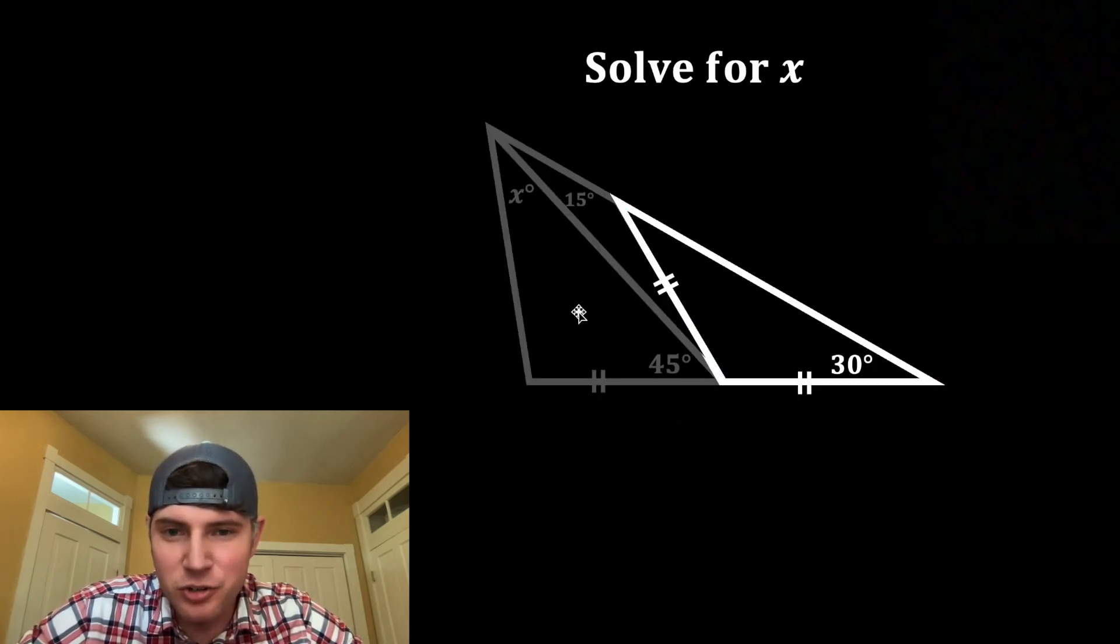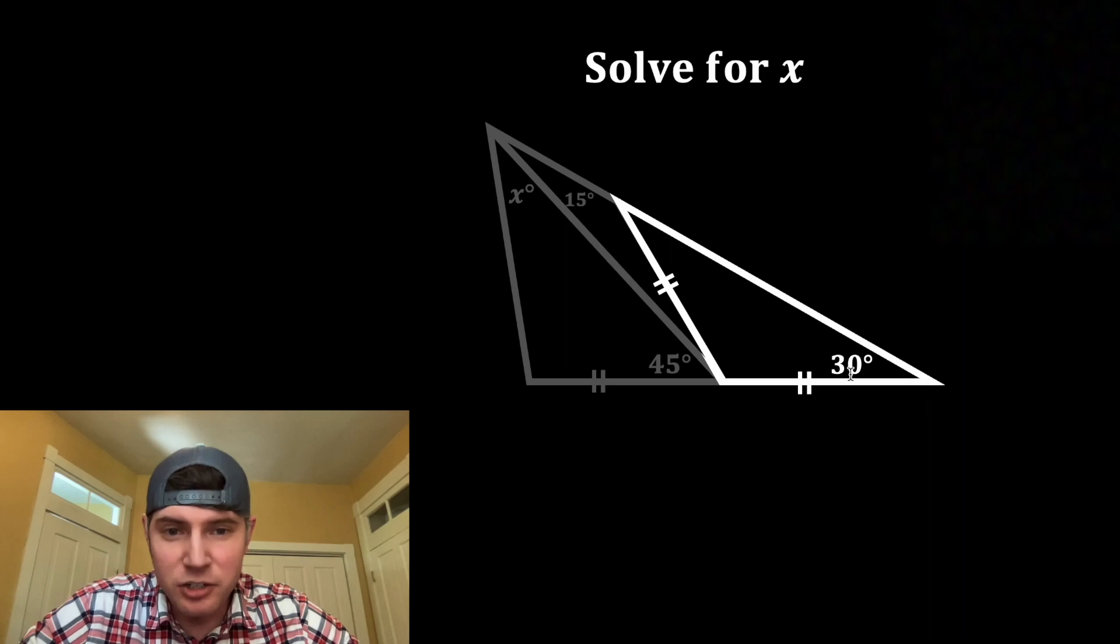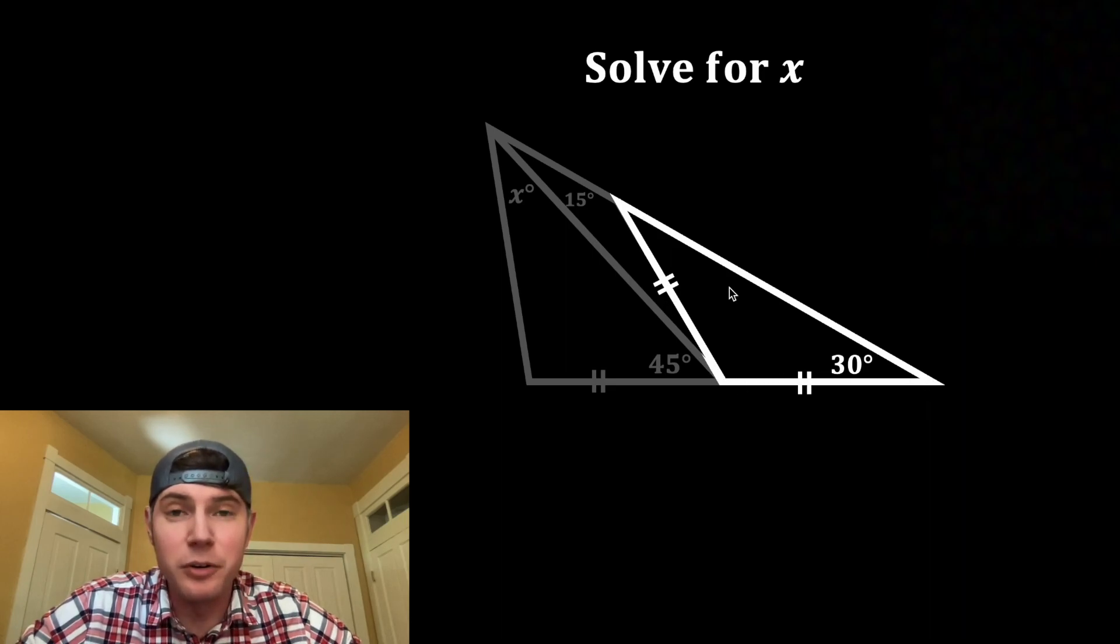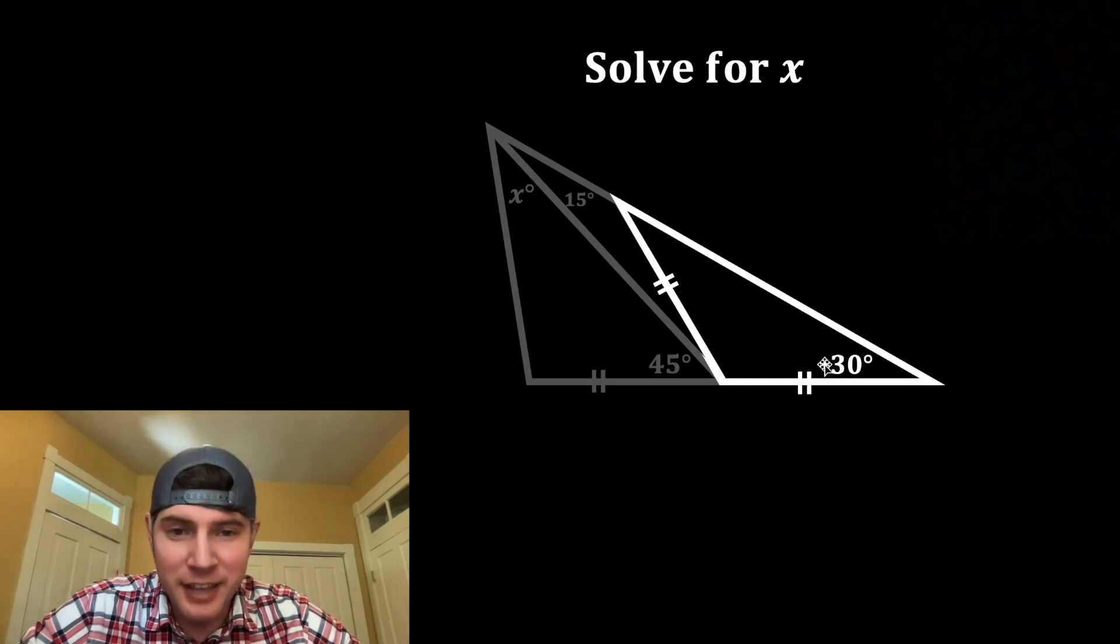Next, let's focus on this triangle right here. Since there are two sides congruent in this triangle, we know it's an isosceles triangle. And the angles opposite the congruent sides are also congruent, so we know that this angle right here is also 30 degrees.